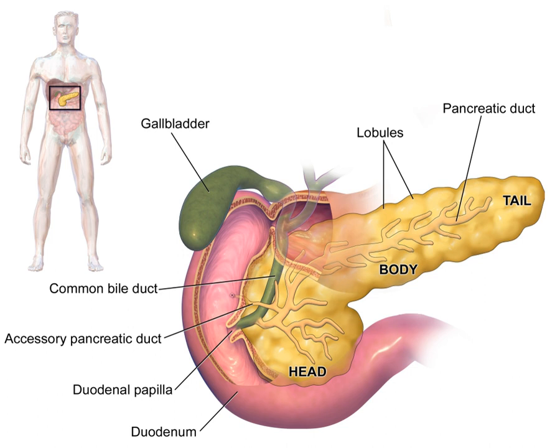The pancreas stretches from the inner curvature of the duodenum, where the head surrounds two blood vessels, the superior mesenteric artery and vein. The longest part of the pancreas, the body, stretches across behind the stomach, and the tail ends adjacent to the spleen. Two ducts, the main pancreatic duct and a smaller accessory pancreatic duct, run through the body of the pancreas, joining with the common bile duct near a small ballooning called the ampulla of Vater. Surrounded by a muscle, the sphincter of Oddi, this opens into the descending part of the duodenum.